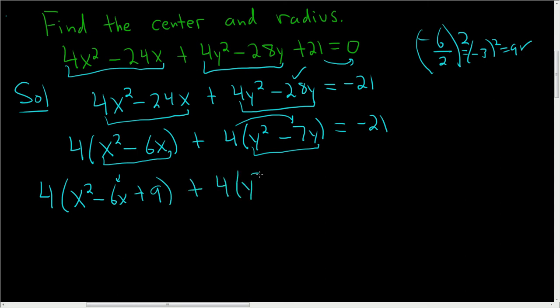Plus 4(y² - 7y + ...). Again, we're going to take the coefficient of y, which is -7, divide it by 2, and square it. So you get 49/4. You just square each piece. So plus 49/4.